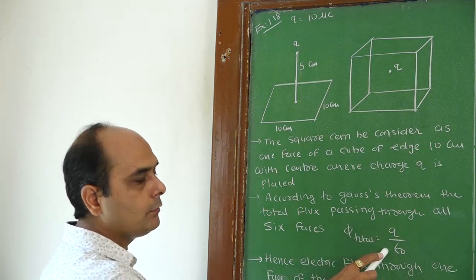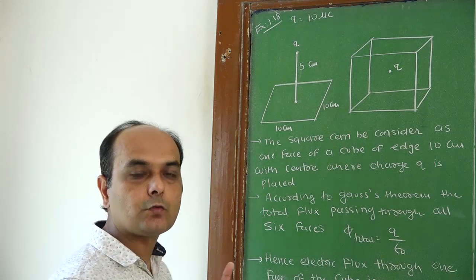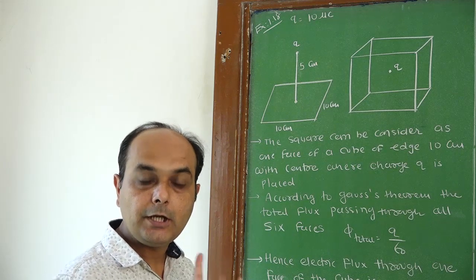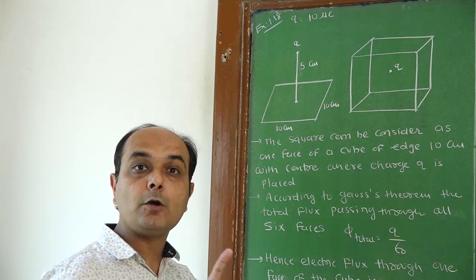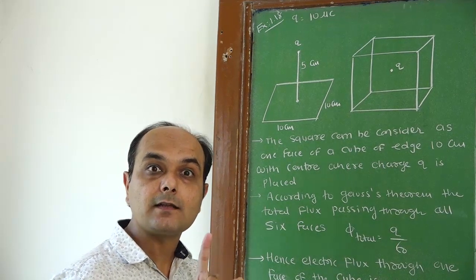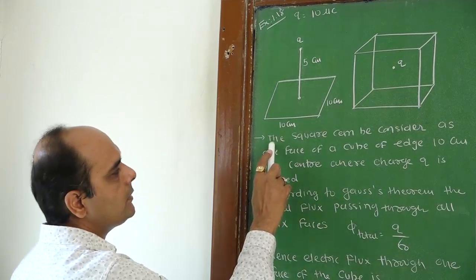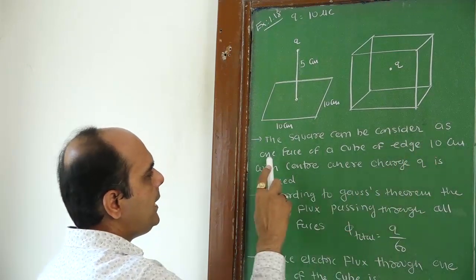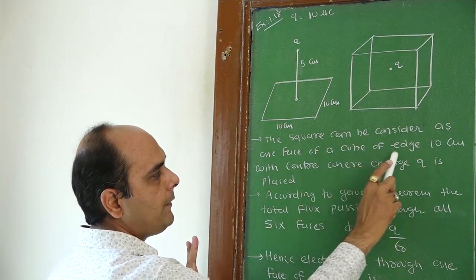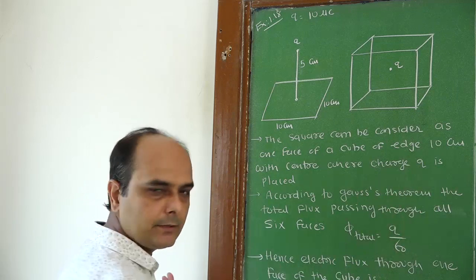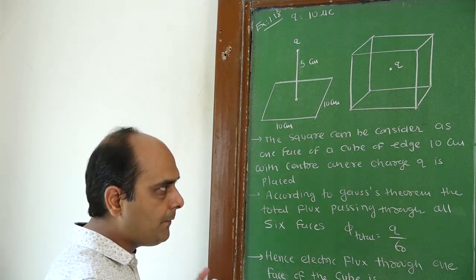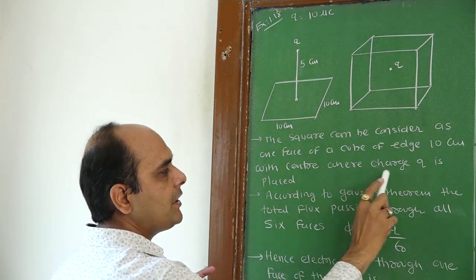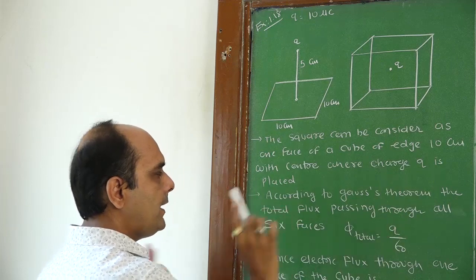The flux passes through how many faces? Six faces, six sides. The square can be considered as one face of a cube of edge 10 cm — one face of the cube, at the center of which the charge is placed.